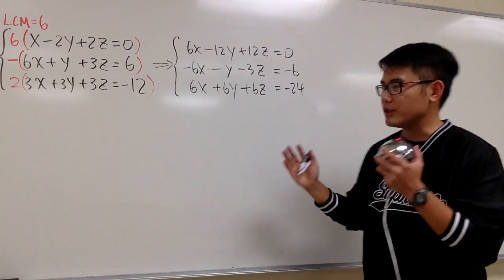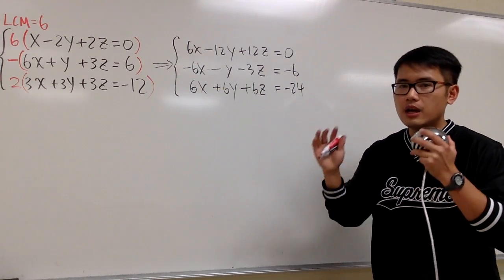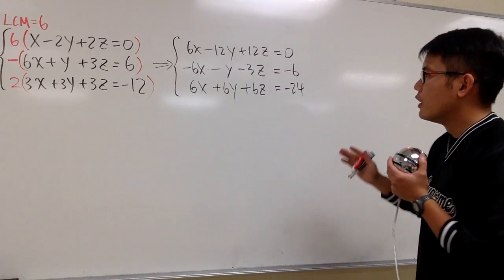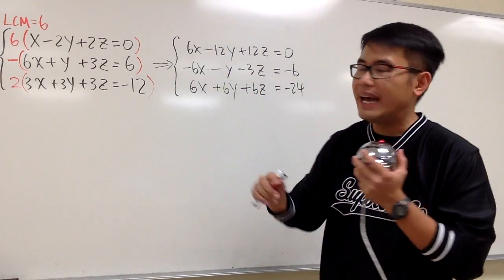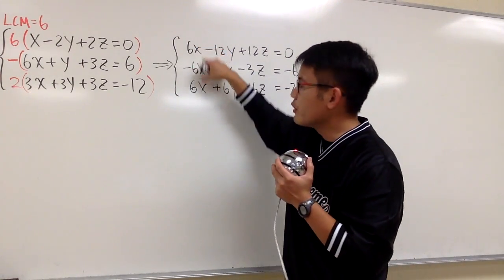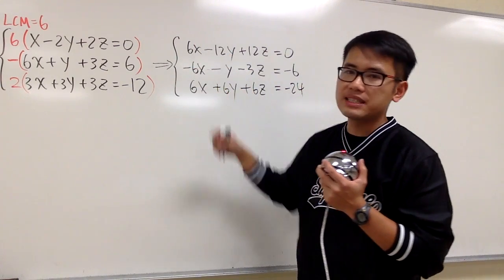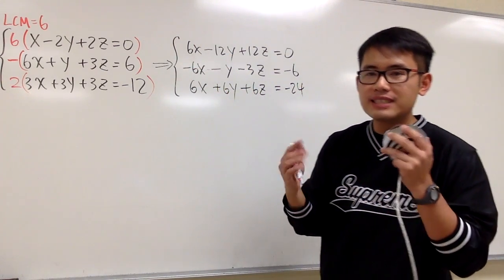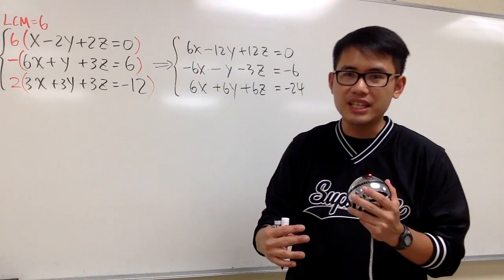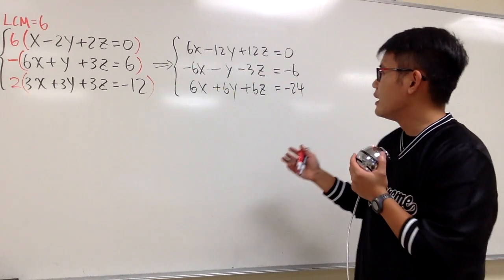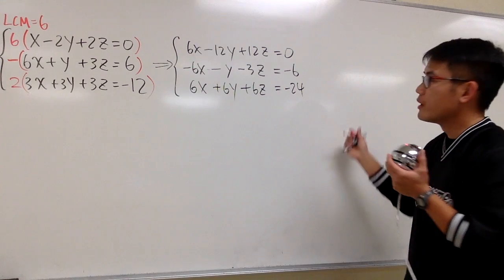Once we have all the numbers in front of x equal to 6 and the signs are alternating — positive, negative, positive — we are ready. Sometimes you can also have negative, positive, negative; that's okay too. Once we have that ready, this is what we can do.